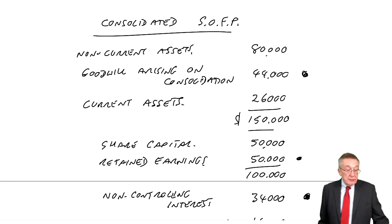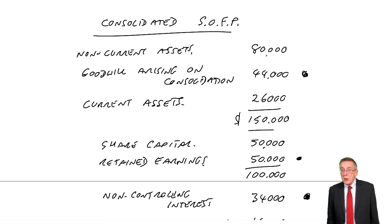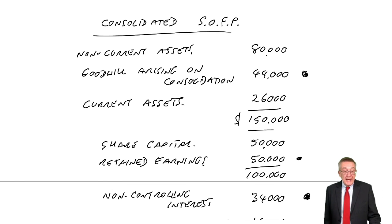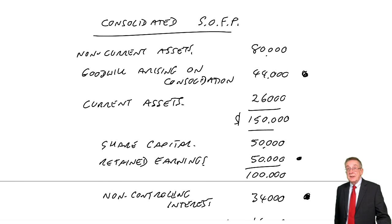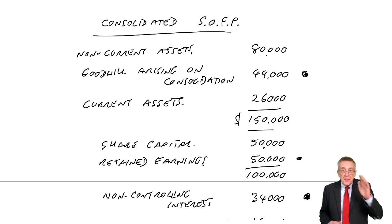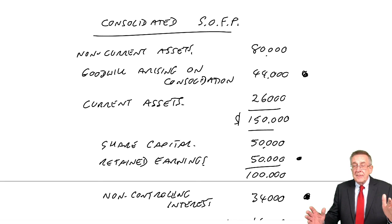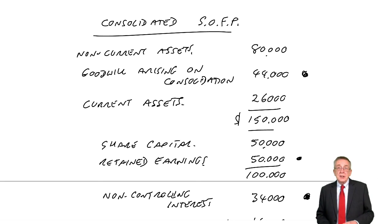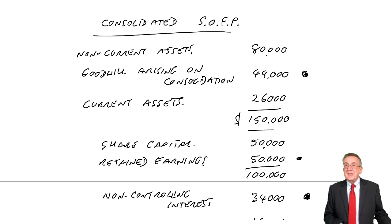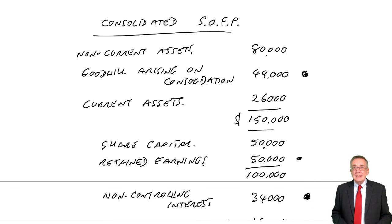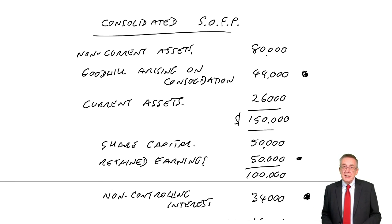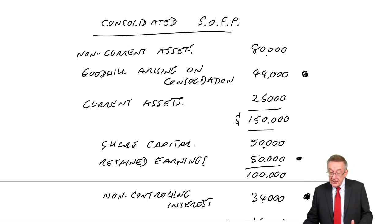That's virtually everything. However, I will need one more lecture on this chapter to deal with what we call inter-entity transactions. Because we do have two separate companies, P and S, and you can have a situation where P has been selling goods to S, or S has been selling goods to P. As you'll see, it does mean a little extra adjustment — but that's the next lecture.